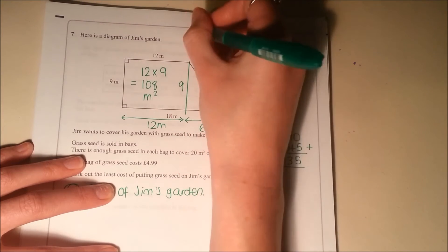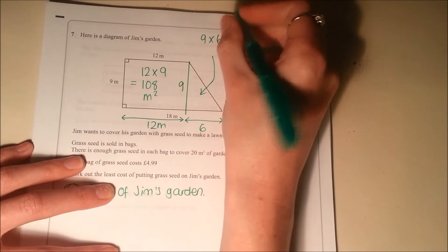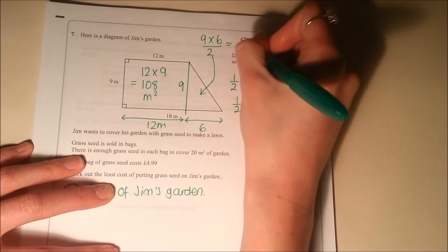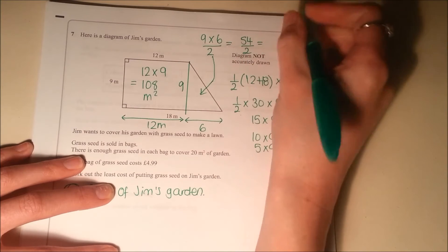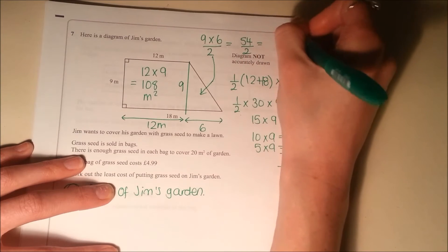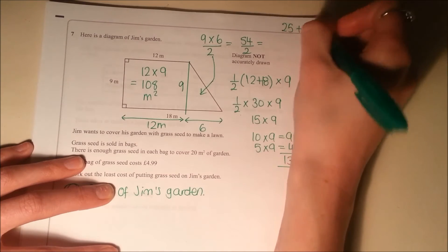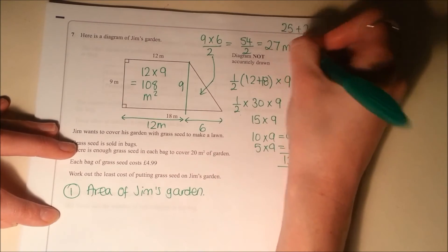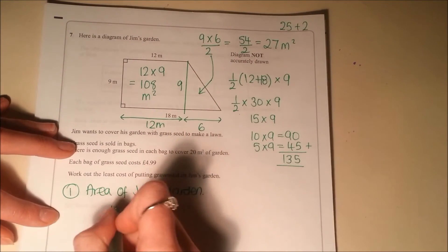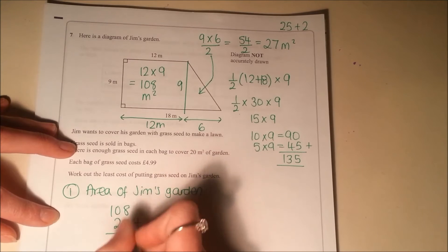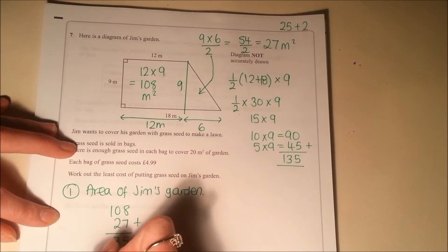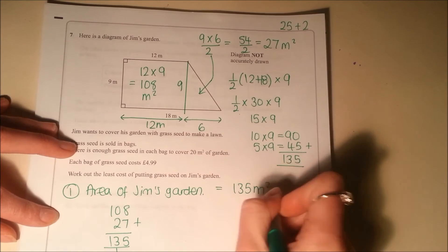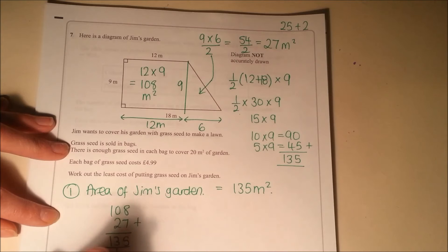So the area of that triangle, we're doing base times height and then halve it. So that would be 54, half of 54. So half of 50 is 25, half of 4 is 2, add them together, 27. And to get the area then, add those two together. So 108 plus 27, 135 again. So Jim's garden is 135 square metres.